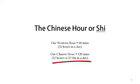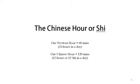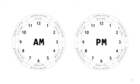In Chinese timekeeping, there are 12 time periods, or shi, in a 24-hour day. Each shi, or Chinese hour, is 120 minutes, as opposed to a western hour which is only 60 minutes. Each of the shi is named after one of the 12 earthly branches.